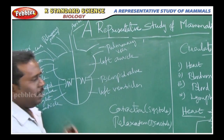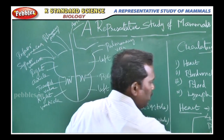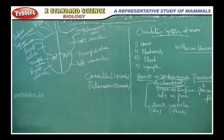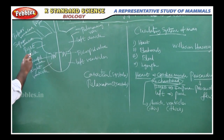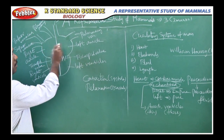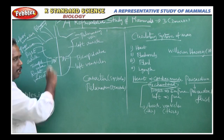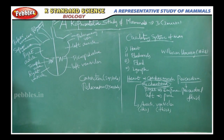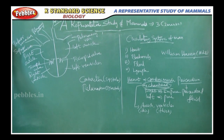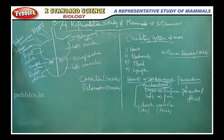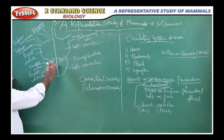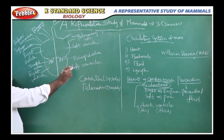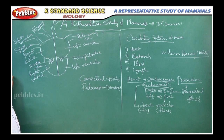The heart is made up of four chambers. It has right auricle and left auricle — this is the upper chamber of the heart, also called right atrium and left atrium. The lower part is called right ventricle and left ventricle.